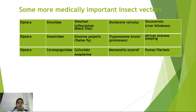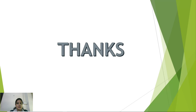Other medically important insect vectors include black flies, which carry Onchocerca volvulus and cause onchocerciasis (river blindness); the tsetse fly, which carries Trypanosoma brucei and causes African sleeping sickness; and Culicoides or Anophelines, which carry Mansonella ozzardi and cause human filariasis. All these vectors and the diseases they transmit are important topics in medical entomology.